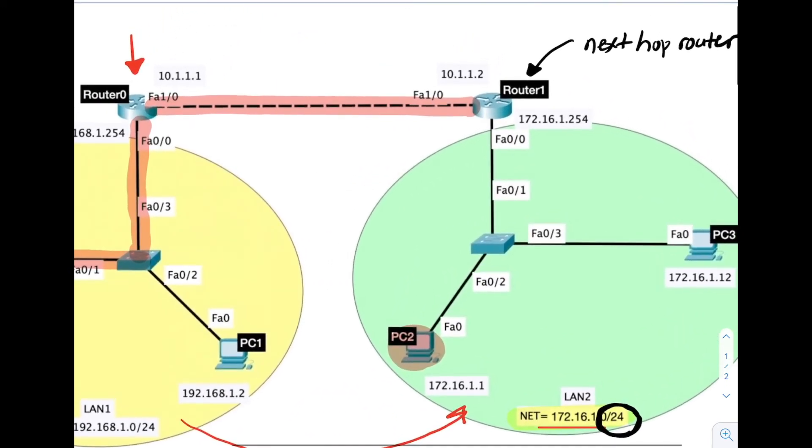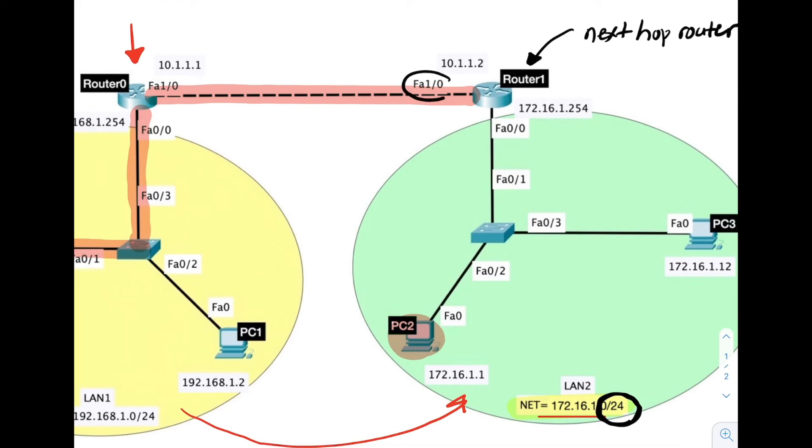This packet will arrive at the interface FA1/0 on router 1. Notice that router 1 has two interfaces. FA1/0 is the interface facing router 0.